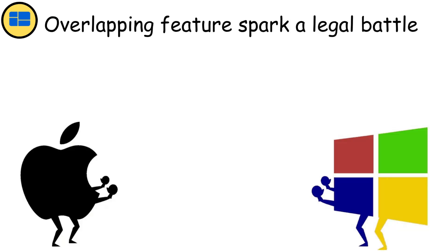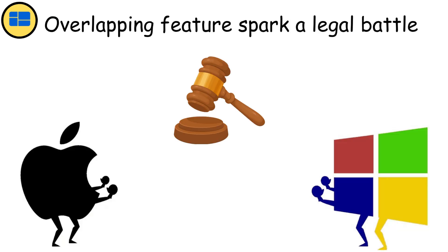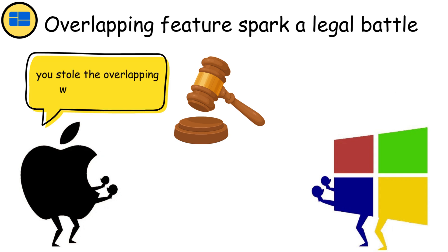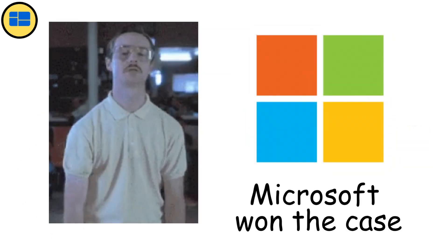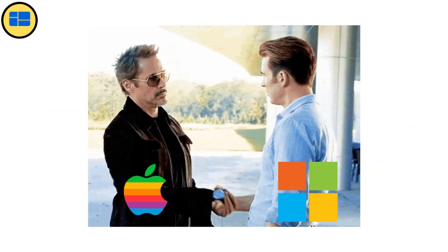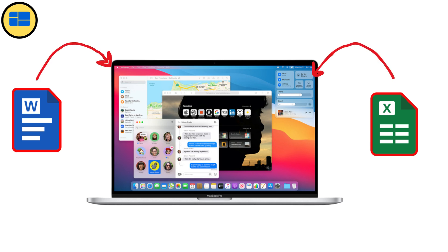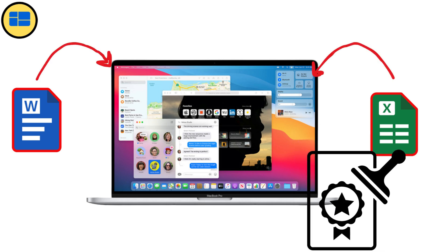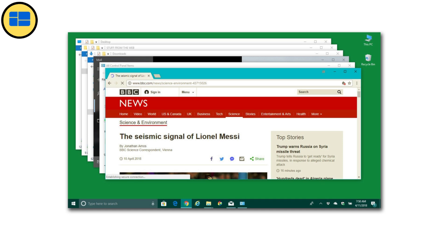However, this feature sparked a legal battle. Apple claimed Microsoft stole the overlapping window concept from their Macintosh computers and took them to court. Microsoft emerged victorious because Apple had previously partnered with them to develop Mac versions of Word and Excel, giving Microsoft legitimate access to similar design ideas. That's why we still click through overlapping windows today.